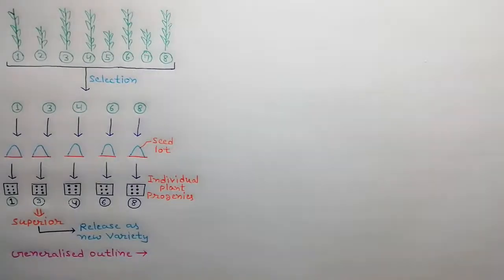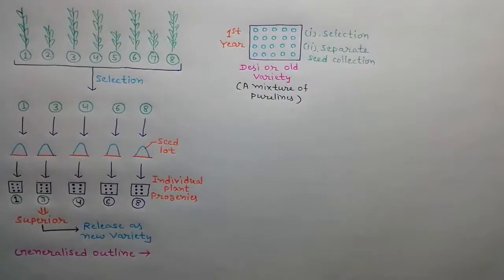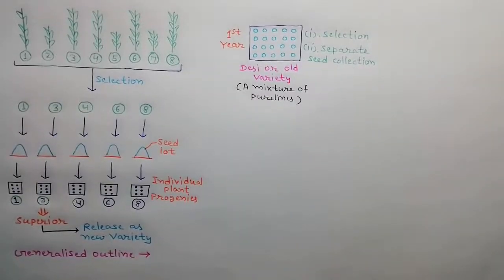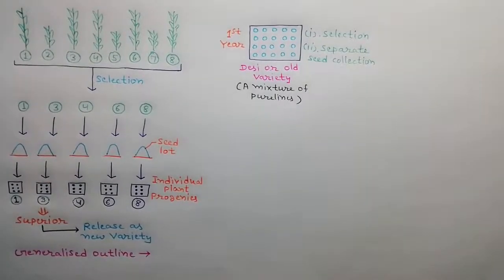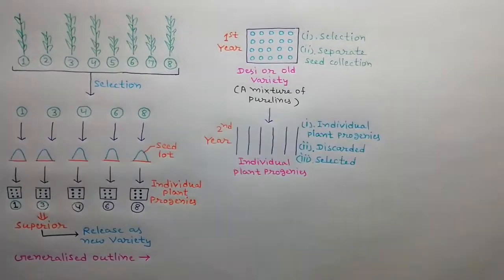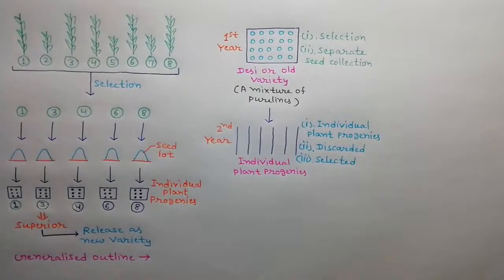We can elaborate the pure line selection method by a generalized outline. In the first year, 200 to 2000 superior plants are selected from a genetically variable population. It may be a desi or old variety which is a mixture of pure lines. Now collect the seeds separately from selected plants. In the second year, grow these seeds separately to produce individual plant progenies. Inferior and undesired progenies are discarded and superior and desired progenies are selected.